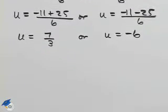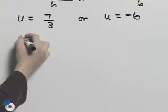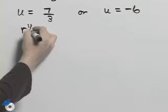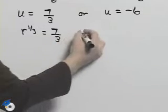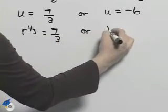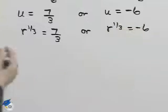Now we're not solving for u, we're solving for r, so u is equal to r to the 1/3. So I'll write r to the 1/3 equals 7/3, or r to the 1/3 equals negative 6.